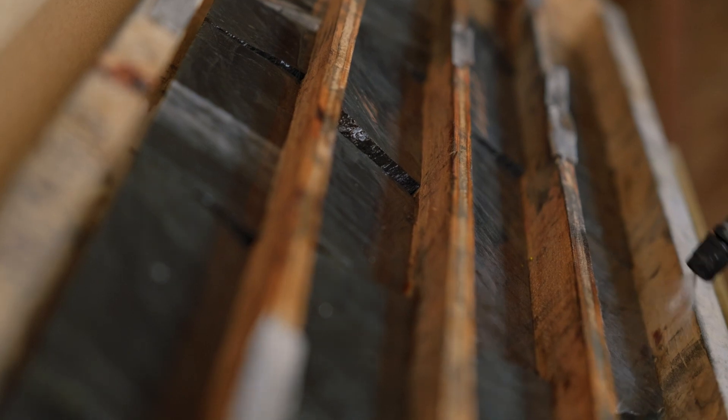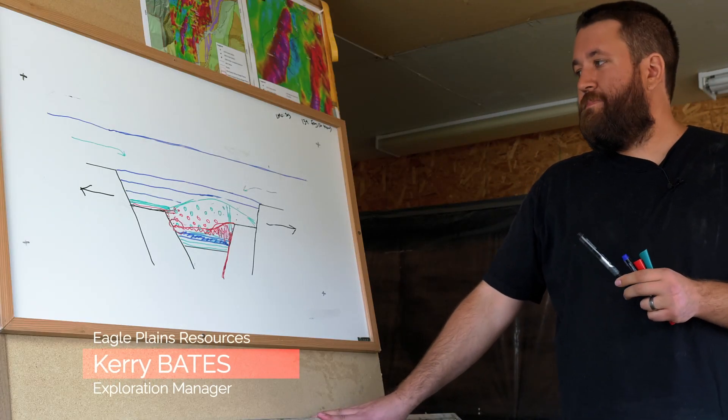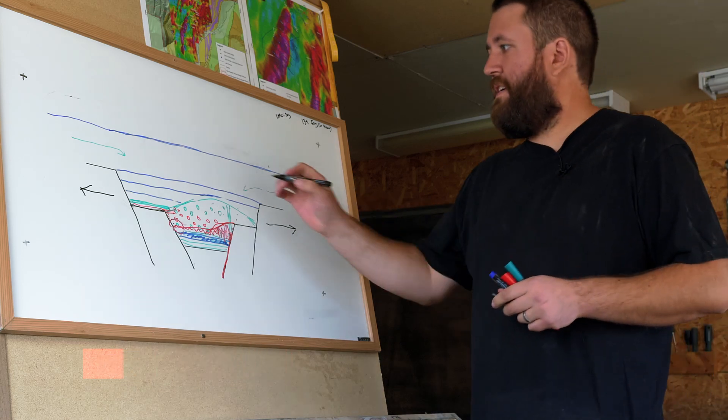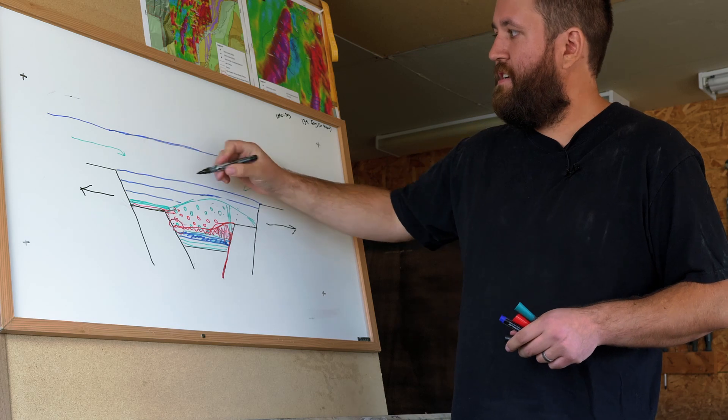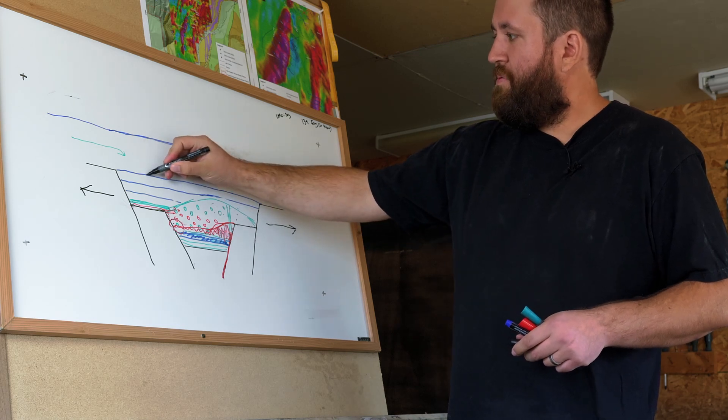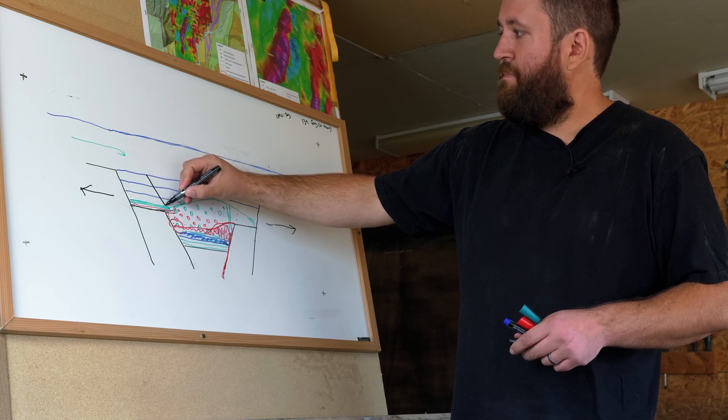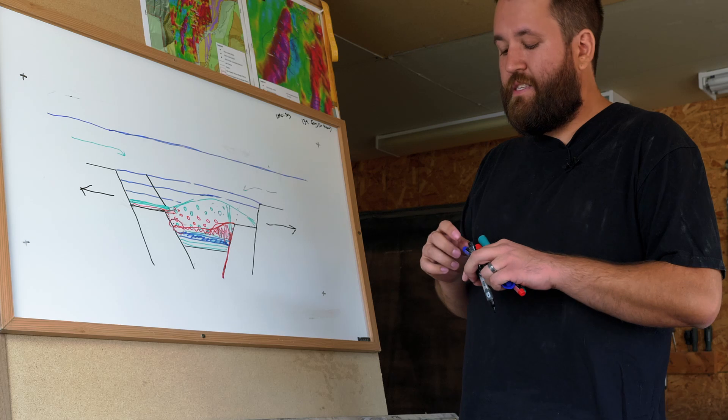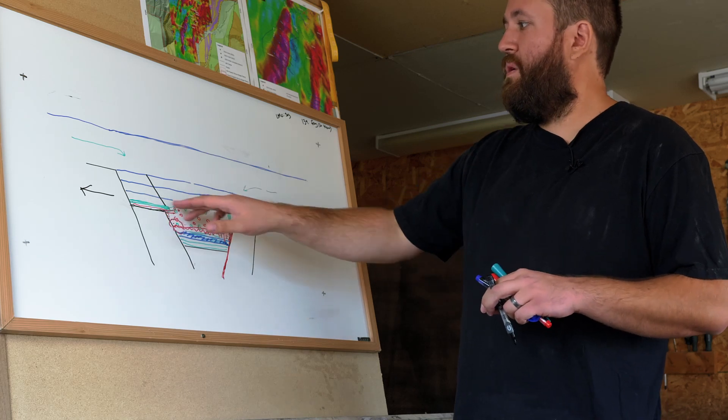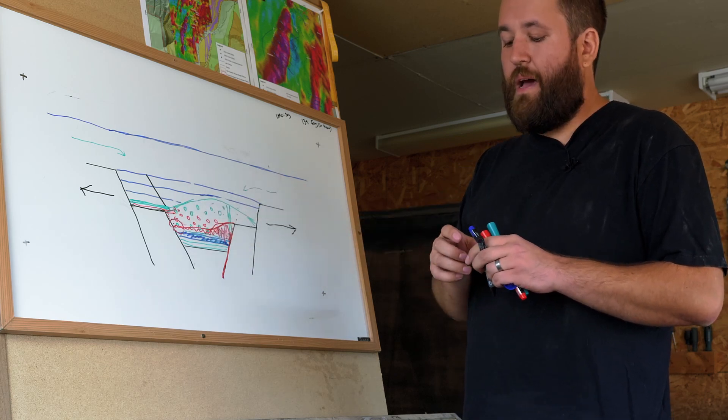We're in the early stages of interpreting drill hole VU 22004. Our current thinking is that we collared the hole in the middle Aldridge. We drilled approximately 303 meters through the middle Aldridge, which is comprised of thick to medium bedded argillites and wackies, until we hit the lower middle contact or Sullivan time horizon at approximately 303 meters depth.